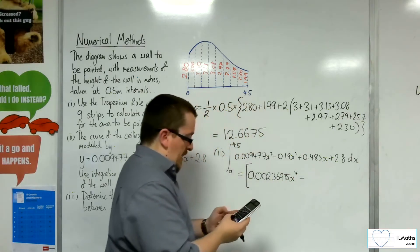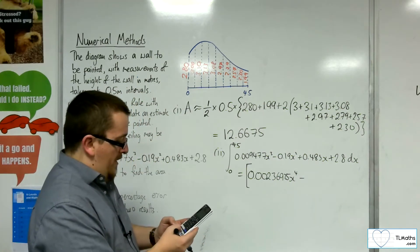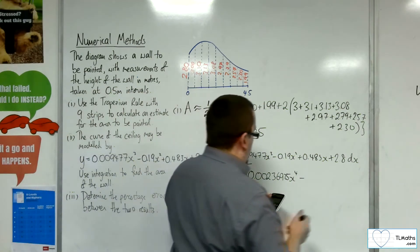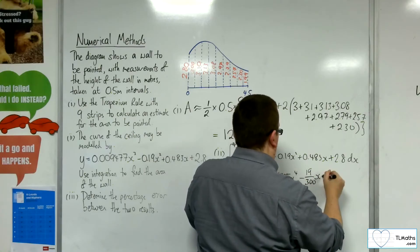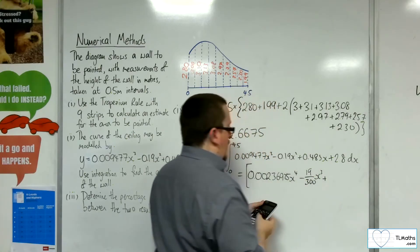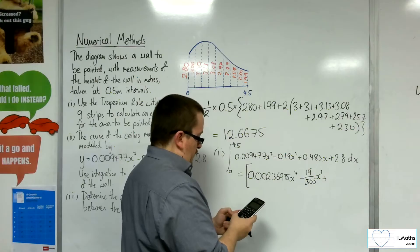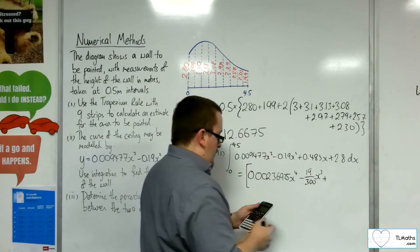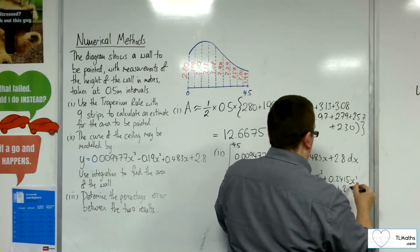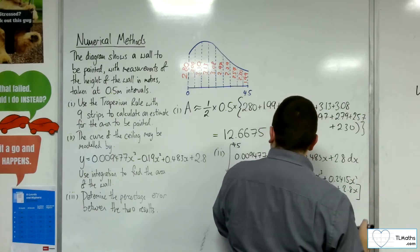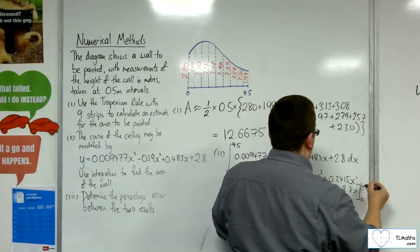So 0.009477 divided by 4 will be 0.00236925x to the 4. Take away, so we've got 0.19 divided by 3, that's 19 over 300x cubed, plus 0.483 divided by 2, so 0.2415x squared, plus 2.8x, and we're evaluating this between 0 and 4.5.